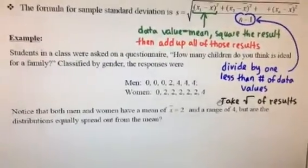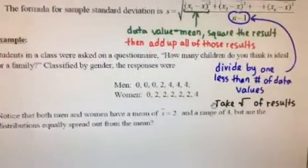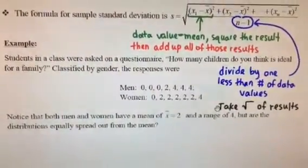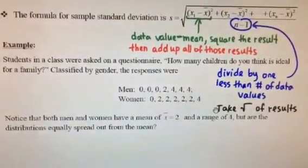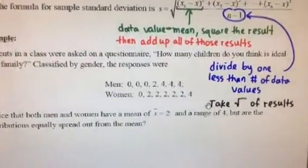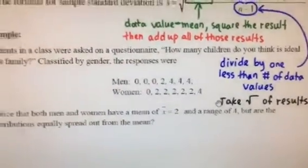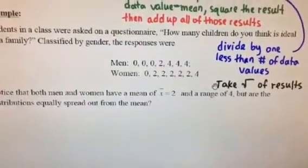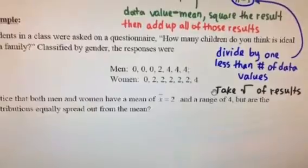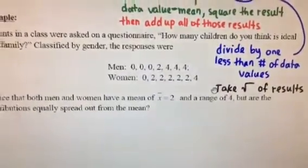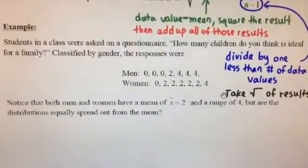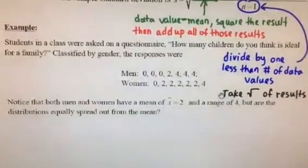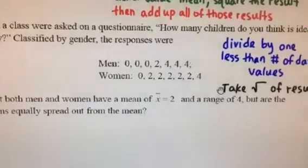And it's an example. It says students in the class were asked on a questionnaire, how many students do you think is ideal for a family? And they did this, the men and the women. Notice the men, you see this set, and the women. If you actually find the mean of each of these sets, you'll find out that the mean is 2, and the range is a high minus low, so the range is the same in both of those also. So if you were just looking at those two pieces of data, you would think that they're probably very similar.